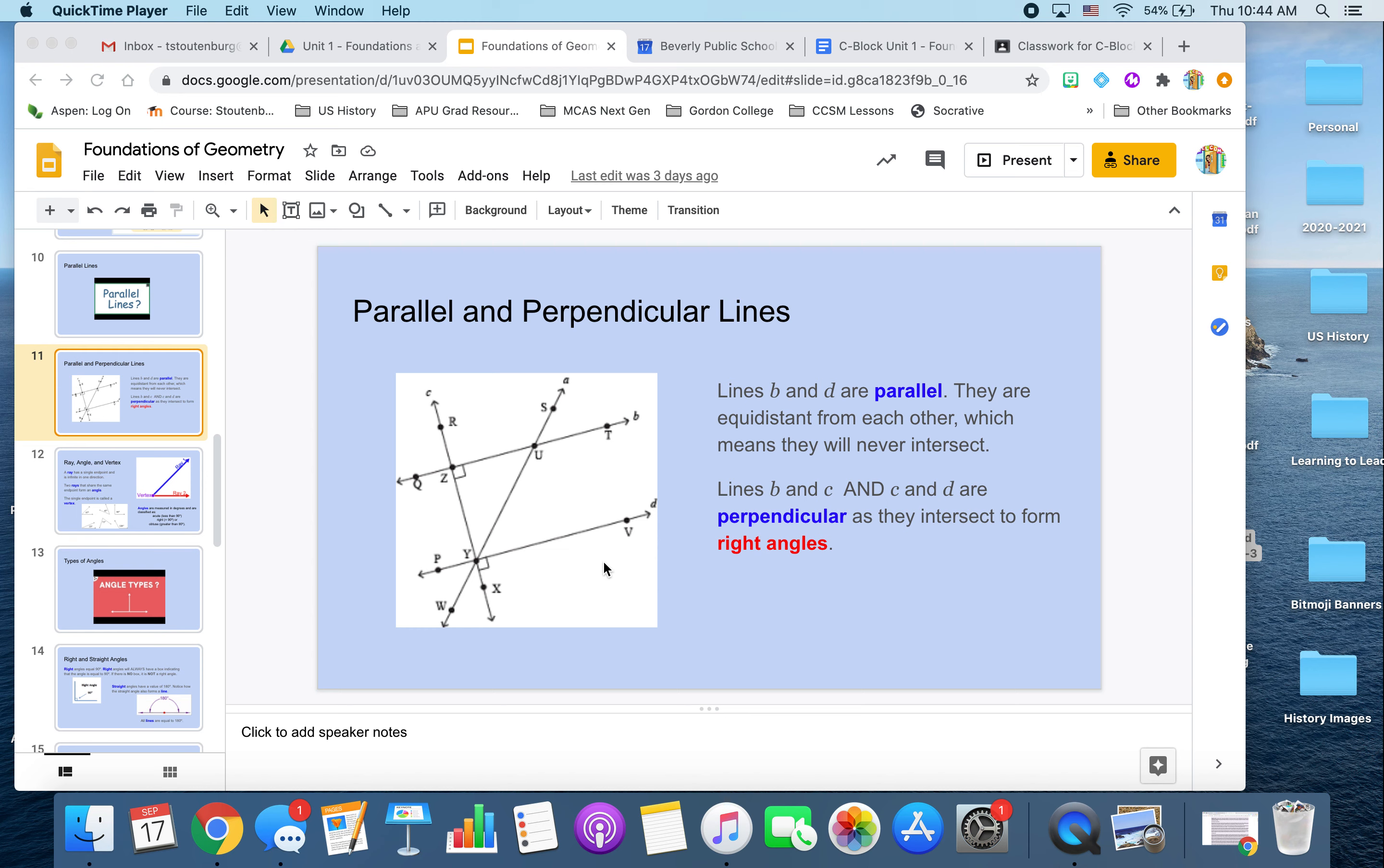Now, if you have two lines that intersect that do not form a right angle, they are therefore not perpendicular. Can you name two lines from this image that do not form right angles and therefore are not perpendicular? There are a few. Line A and line B. Those two lines intersect, and there is no little box here to indicate that it's a right angle, so therefore those lines are not perpendicular.